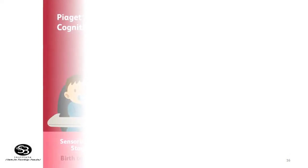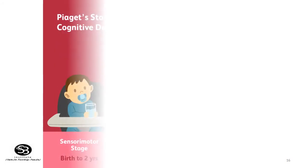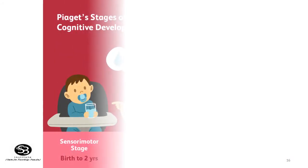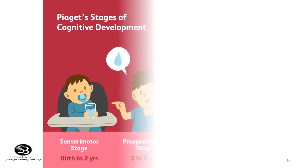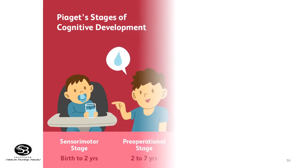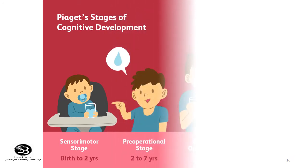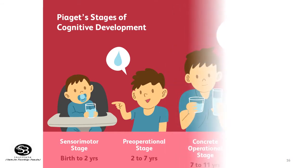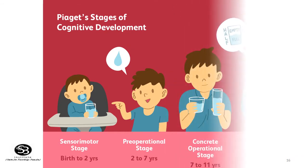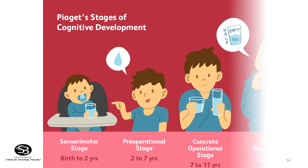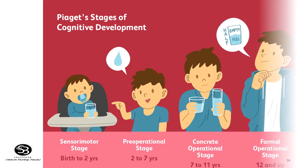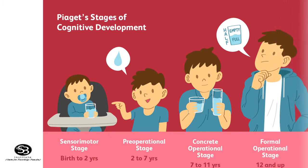Piaget's stages of cognitive development are: first, the sensorimotor stage, from birth to two years; next, the pre-operational stage, from two years to seven years; then the concrete operational stage, from seven years to eleven years; and finally, the formal operational stage, from age twelve to the entire lifetime.